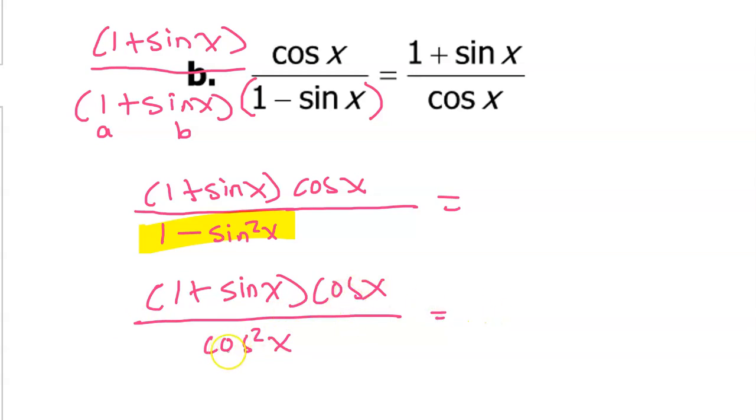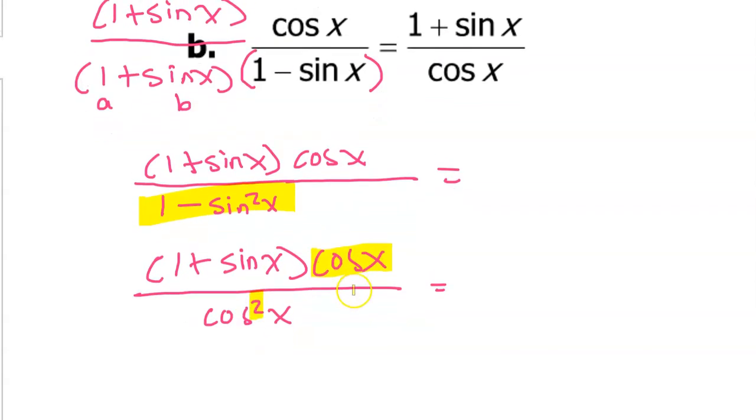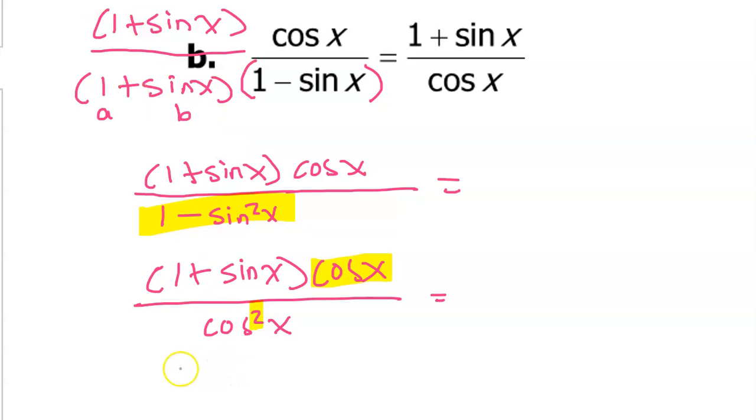So of course now I have a cosine in the numerator and I have two cosines in the denominator. So this cosine is going to cancel out one of the cosines in the denominator. That will leave us with one plus sine x over a single cosine x. And that is the target. So we have now verified this identity.